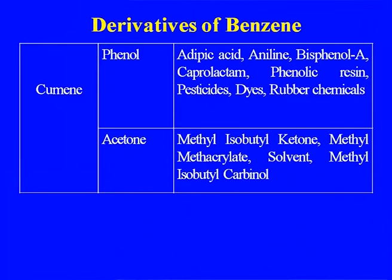Benzene hexachloride, also called gammaxene, was the first pesticide made from benzene. After that came DDT, which was later banned. Detergents like linear alkyl benzene use benzene in an alkylation process. Dyes and intermediates consume huge amounts of aniline produced from benzene derivatives.